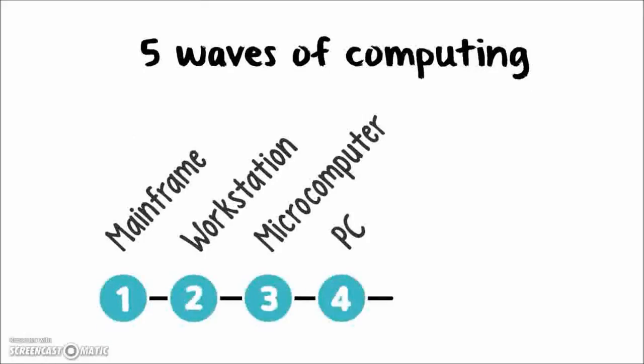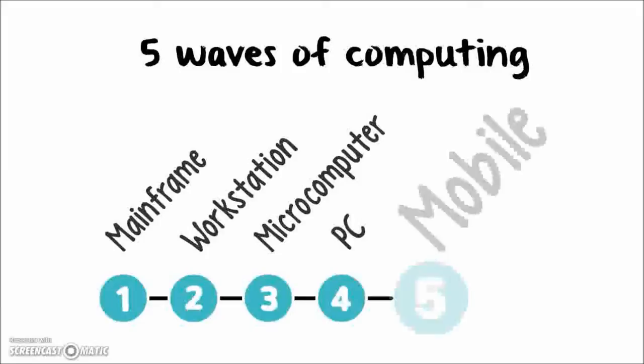First of all, there are five waves of computing. Way back we had mainframe computers, then came workstations, microcomputers, and PCs. Websites are really designed for PCs. But the wave that we're in now is the mobile wave. Most people, especially those in the younger generations, use mobiles — mobile internet and mobile apps for accessing information about their world.